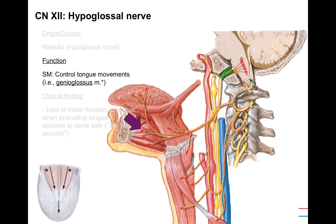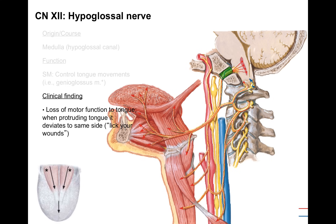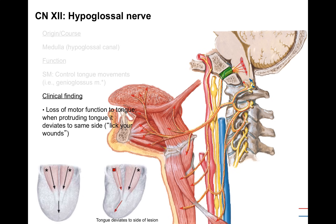The right and left genioglossus muscles go to the inside of the mental symphysis of the mandible at an angle, and the two angles meeting create a vector that pushes the tongue forward. If one side is knocked out, when protruding the tongue it deviates to the same side as the lesion, because of how those vectors work. The mnemonic is: you lick your wounds — if you knock out the right hypoglossal nerve, you knock out the right genioglossus, and the tongue deviates to the right when you stick it out.